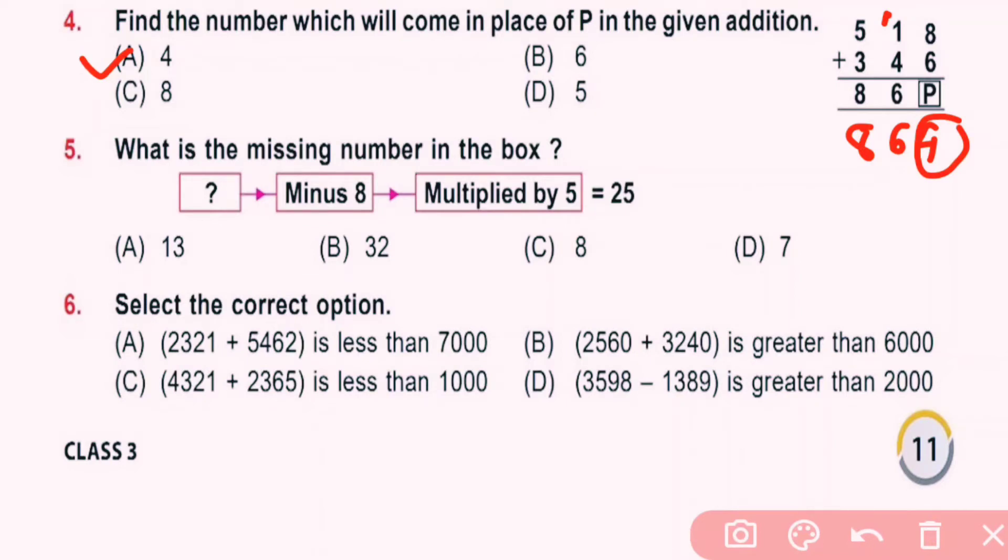Question number 5: What is the missing number in the box? Question mark minus 8 multiplied by 5 equals 25. Which number multiply by 5 gives 25? 5 into 5 gives 25. We want the answer of this is 5. So how much minus 8 will give 5? 13 minus 8 will give 5, and 5 into 5 is 25. So here also A is correct answer.